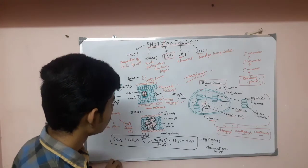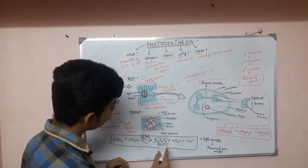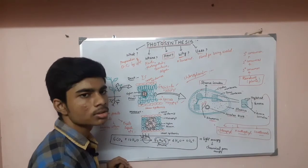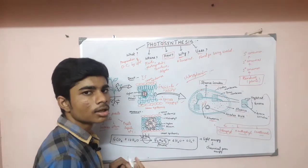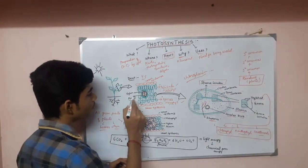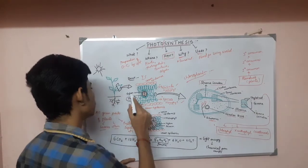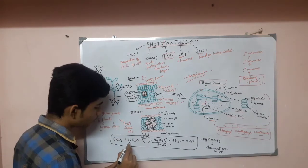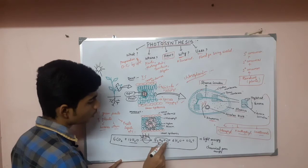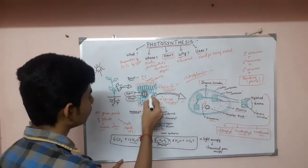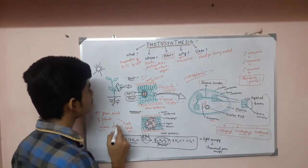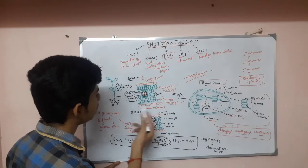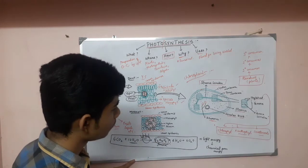The glucose produced is transported through the phloem. Phloem is responsible for the transport of minerals and food, while xylem is responsible for the transport of water and minerals. The phloem transports the glucose produced through photosynthesis from the leaf and supplies it to all parts of the plant. Water molecules come in through xylem, are involved in photosynthesis, and the oxygen produced is released into the atmosphere.